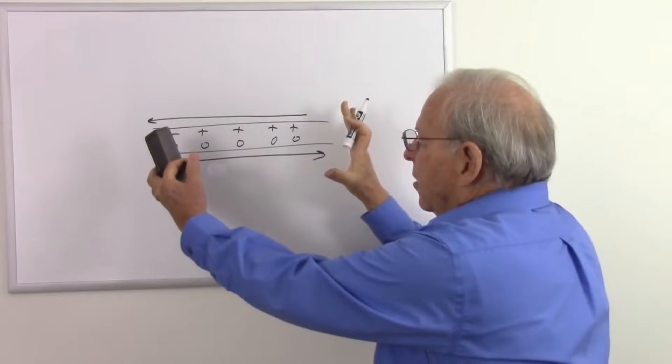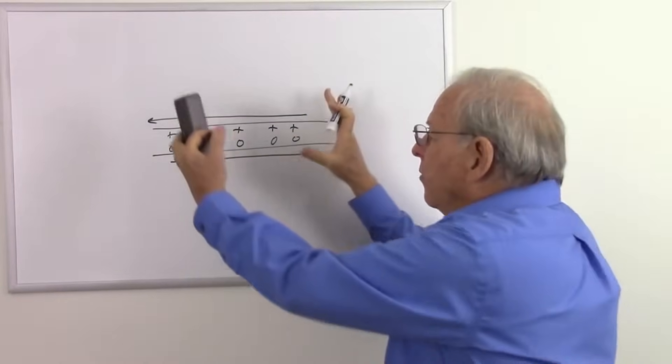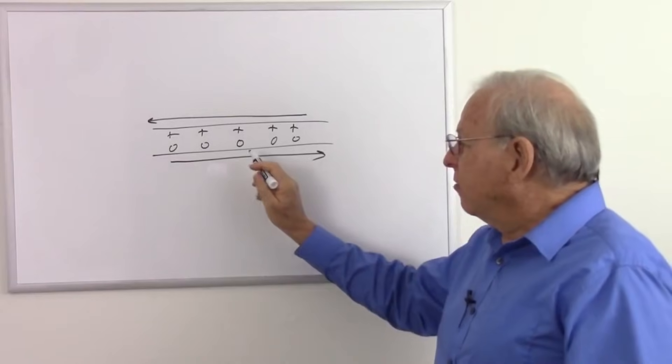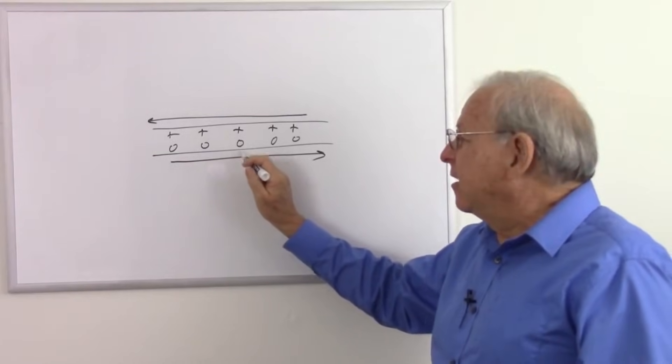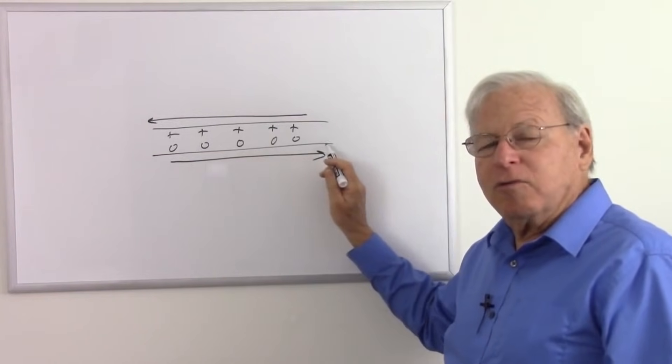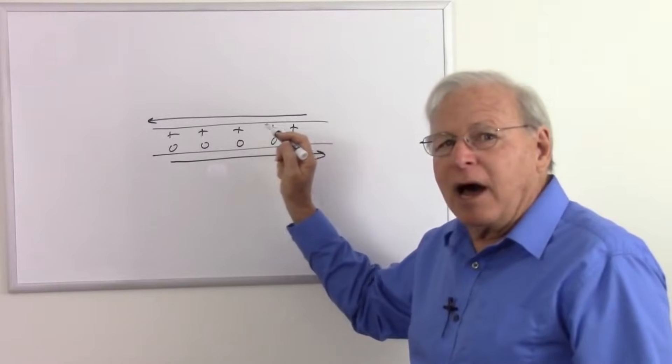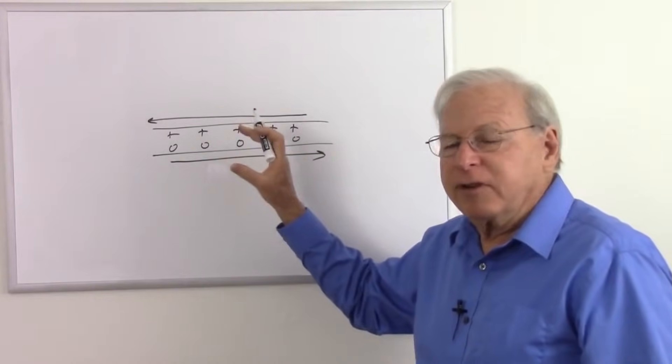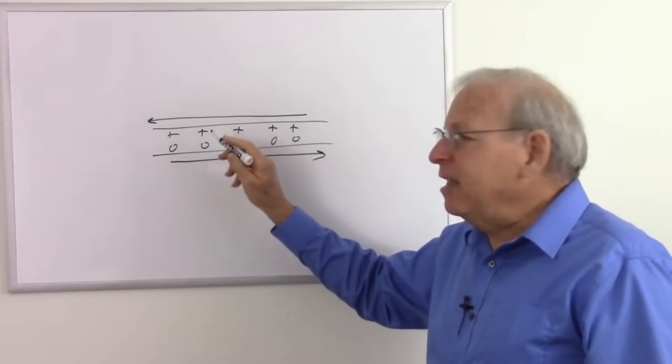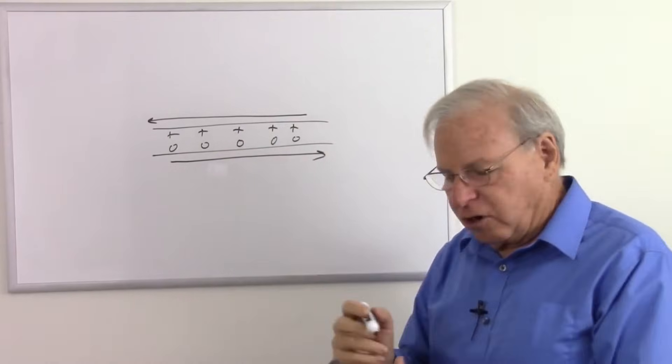The electrons are length contracted together. The holes are length contracted together. So yes, you should see a net negative charge because of these moving electrons. But there is a net positive charge from special relativity countering that. And so in the end, you don't see a net charge in the wire.